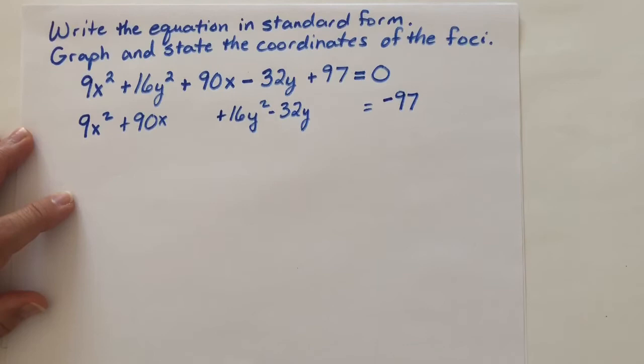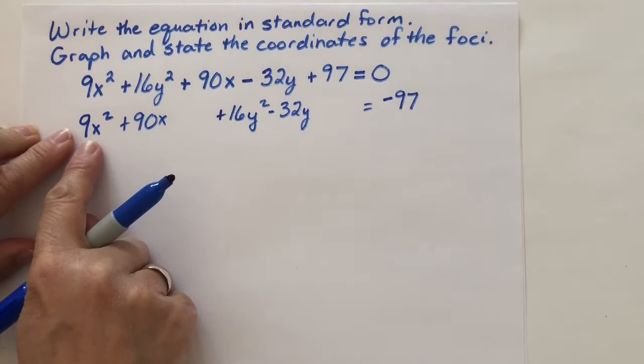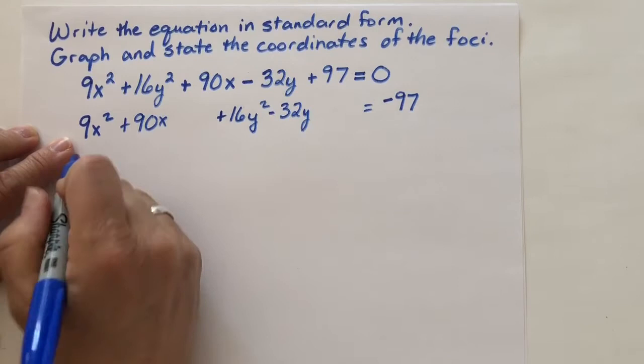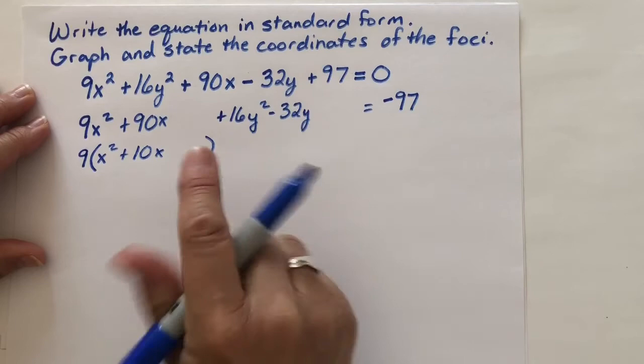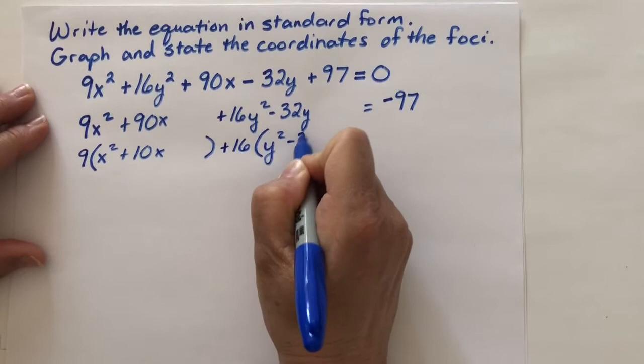But remember when we complete the square, we want the coefficient of the quadratic term to be 1. So we're going to factor out the 9... 16. So it looks like this. And here we'll factor out 16.